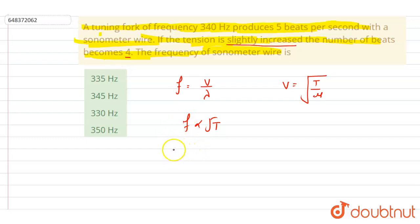the frequency will also slightly increase. Let's say the tuning fork was earlier having frequency f_T, and now it is having frequency f'. Since the tension is increased, the frequency will also increase. A tuning fork of frequency 340 Hz produces 5 beats per second with this wire. Now when tension is increased, the frequency will increase in the sonometer wire.